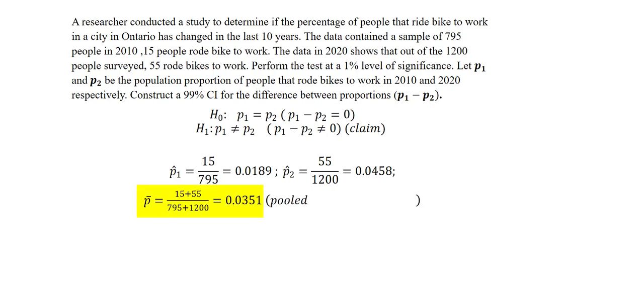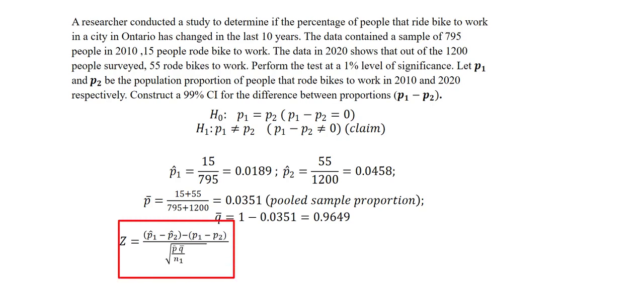Next I need P bar. My P bar will be the pooled sample proportion. So this will be 15 plus 55 divided by 795 plus 1200. Next my Q bar will be 1 minus my P bar which in this case is 0.0351. Once I get all of these values I will put them into the formula to compute the test statistic.